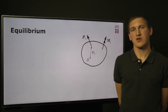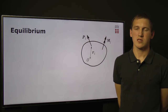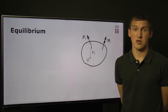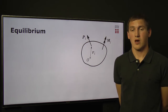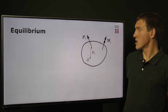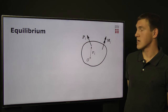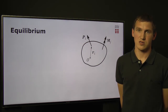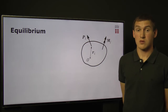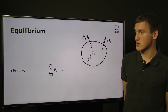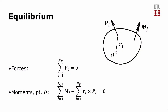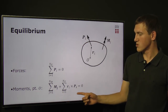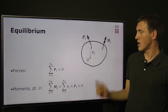Before we continue, let's first look at the general case of body equilibrium. Mathematically speaking, equilibrium is zero total force and zero total moment acting at the beam. Let's look at the case of a 2D body with some forces PI and moments MJ acting at it. We can write down two vector equations: the sum of forces is equal to zero, and the sum of moments. Notice that we have not only moments acting directly at the body, but also the moments generated by the forces at position RI.